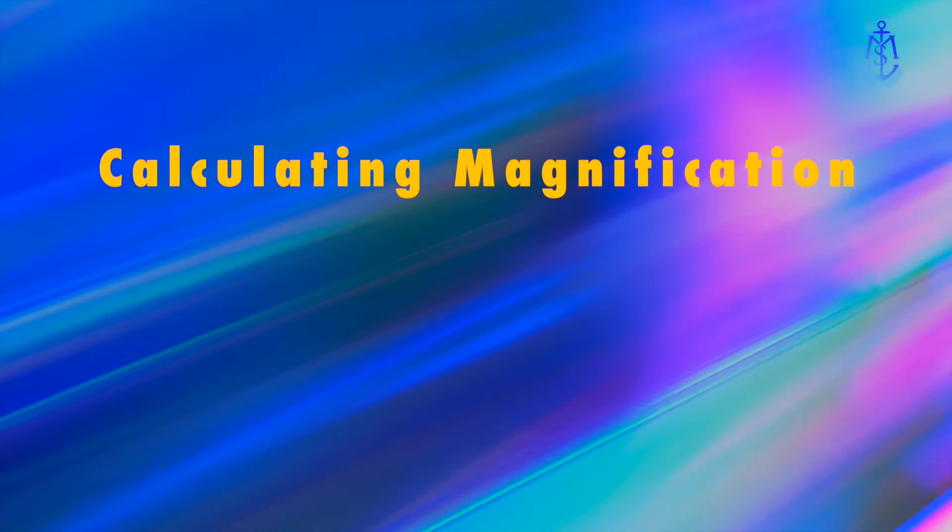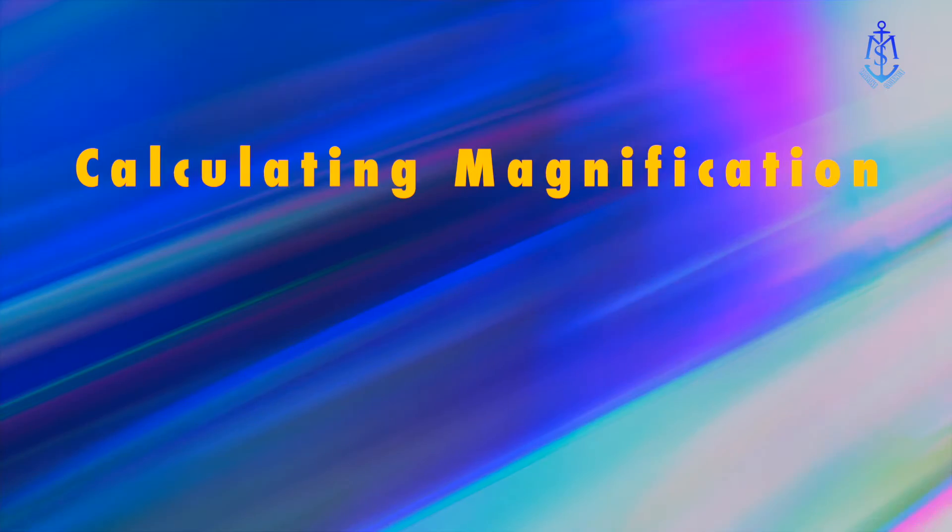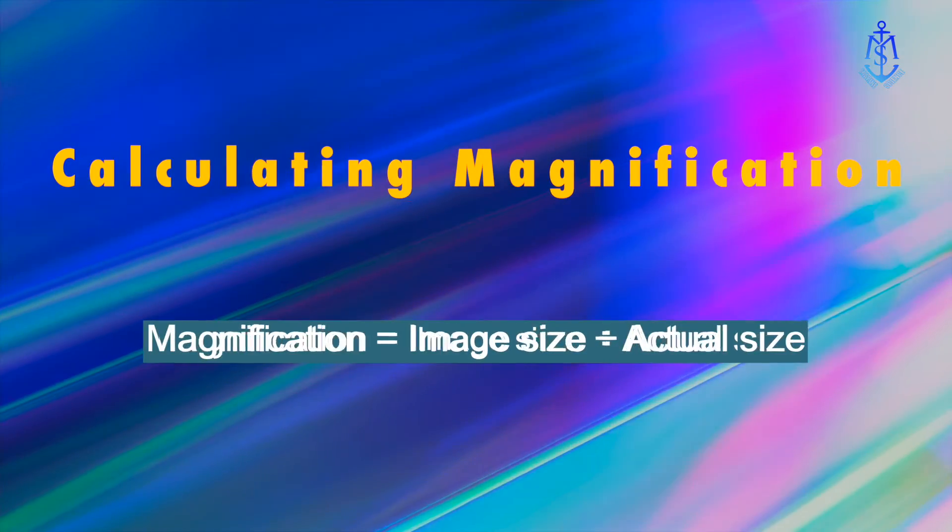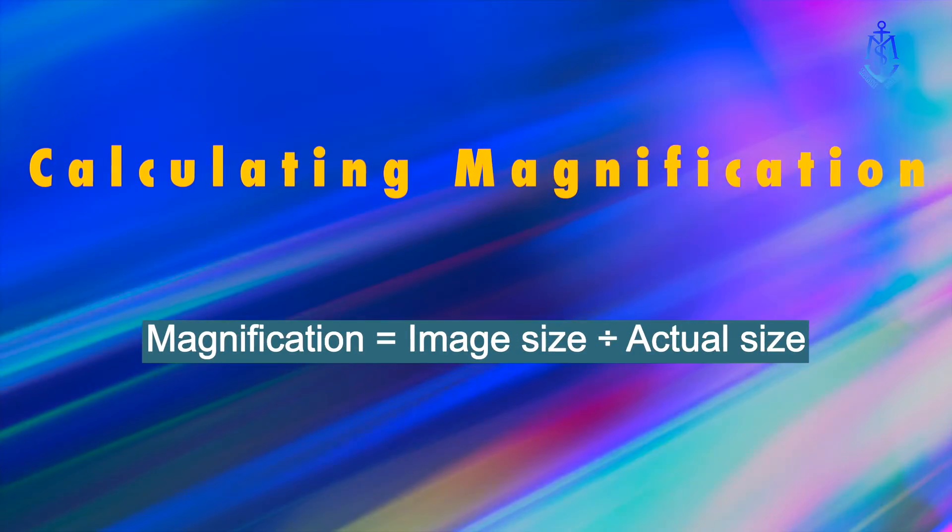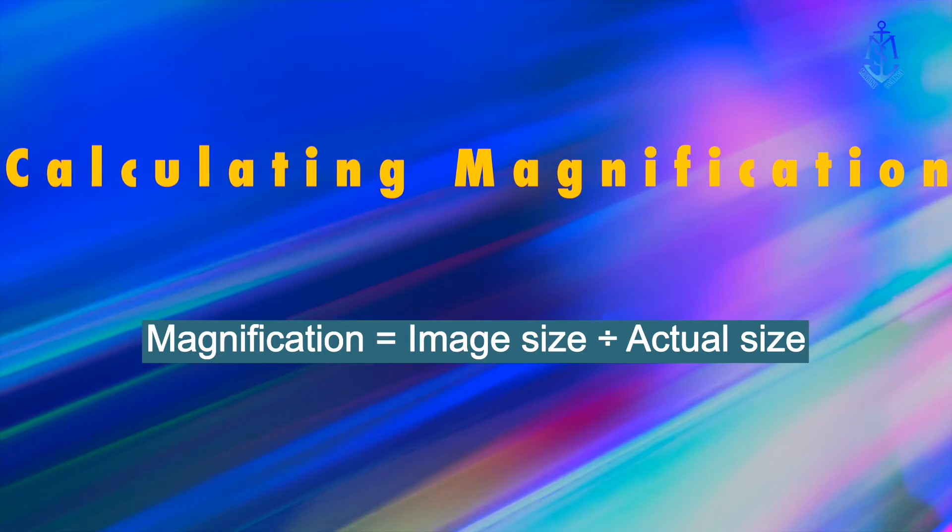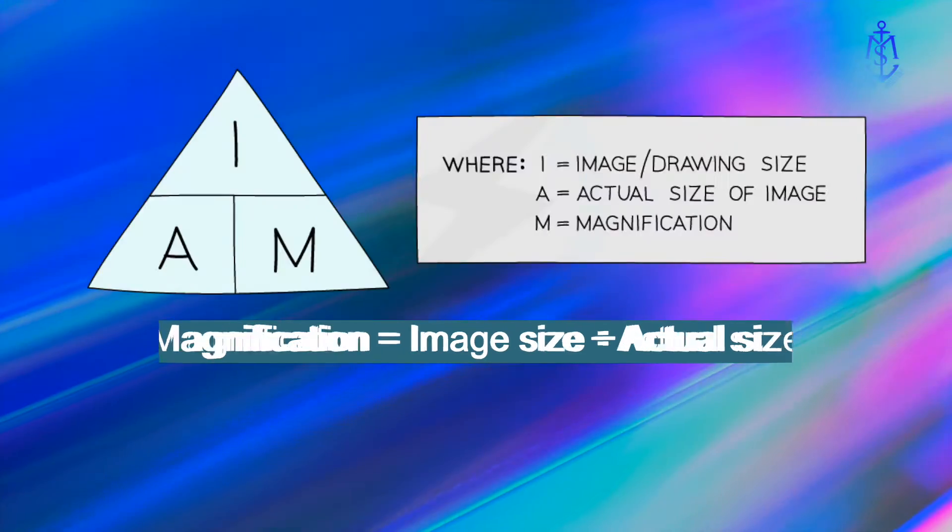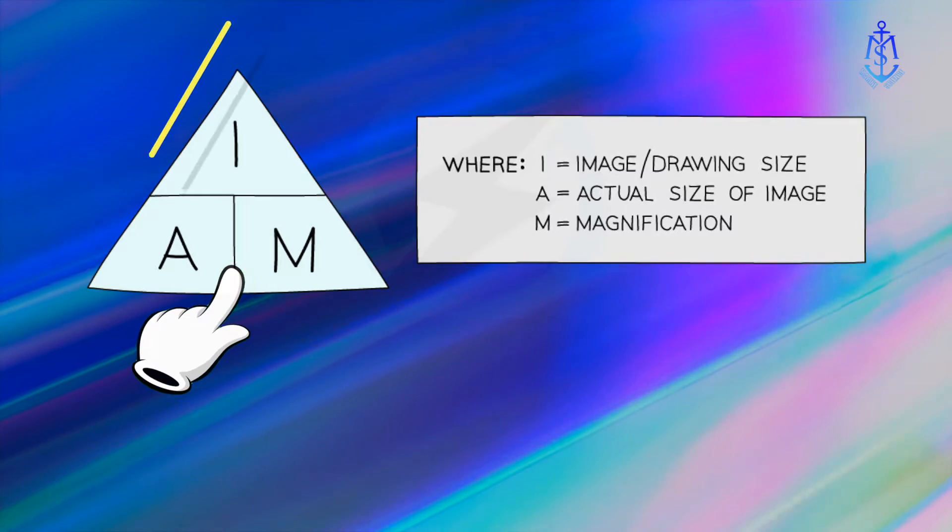Calculating magnification. Magnification is calculated using the following equation: magnification is equal to image size by actual size. A better way to remember the equation is using an equation triangle.